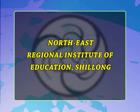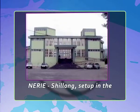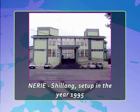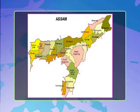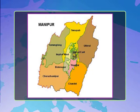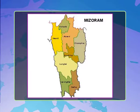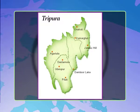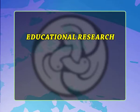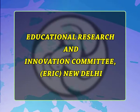The fifth constituent unit of NCERT is the Northeast Regional Institute of Education (NERIE), Shillong, set up in 1995. It caters to only the in-service education needs of northeastern states including Assam, Arunachal Pradesh, Manipur, Meghalaya, Mizoram, Nagaland, Sikkim, and Tripura. The institute aspires to emerge as a leader in the field of school education in the northeastern region by playing the role of a proactive organization.